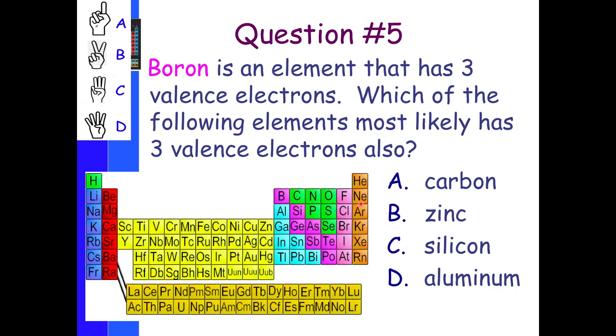Question five asks, boron is an element that has three valence electrons. Which of the following elements is most likely to have three valence electrons also? So there's boron right there. And then our choices are carbon, zinc, silicon, and aluminum. So that's probably going to be aluminum, right? Aluminum has three valence electrons because it also is in the same group. I'm hoping you guys are noticing a pattern here.